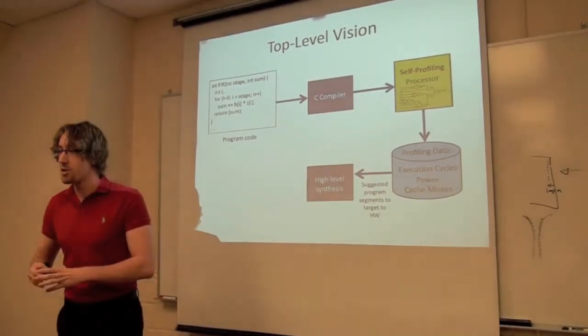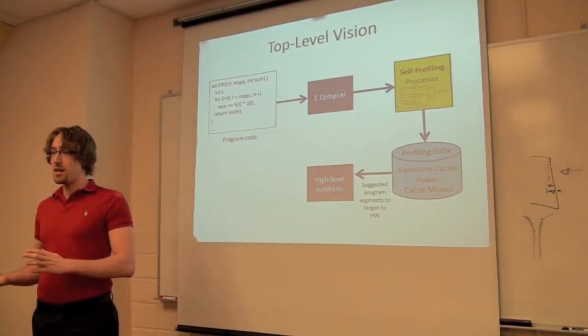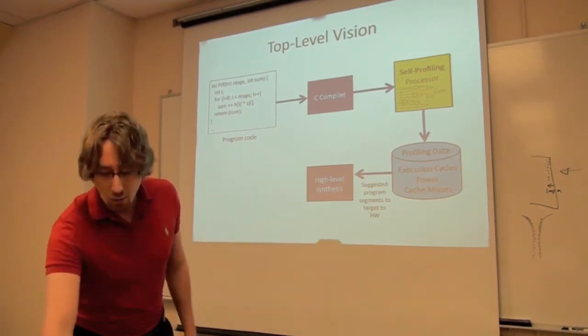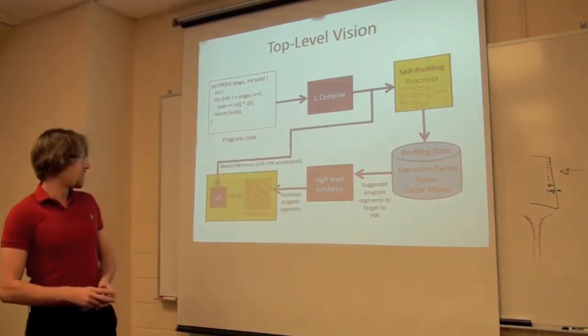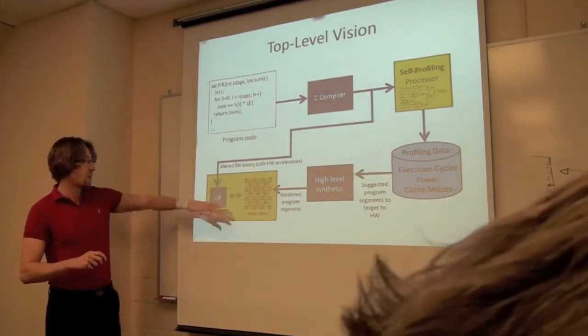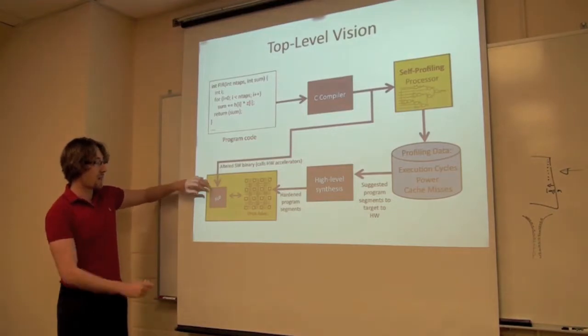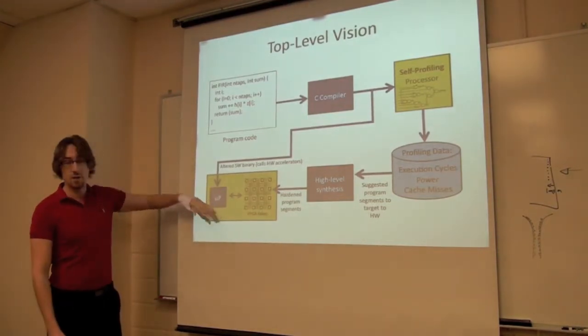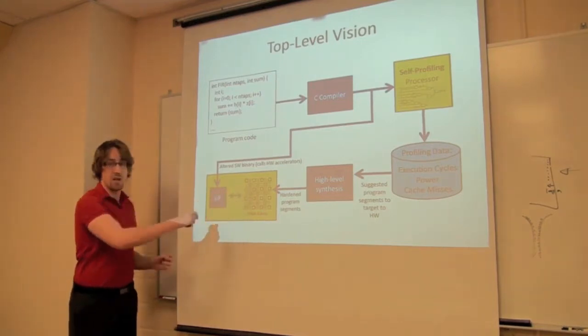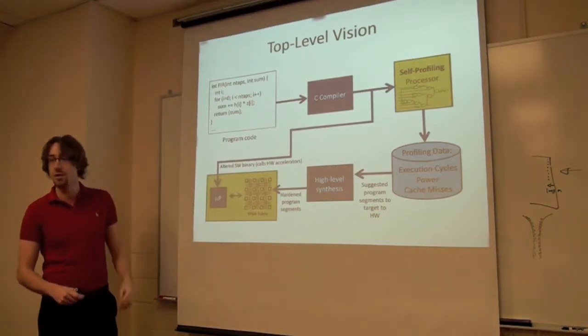So these program segments you push into what's called a high-level synthesis tool, which takes a high-level language like C and can produce synthesizable Verilog as output. When you have the synthesizable Verilog, you can put that into Quartus and compile what we call hardware accelerators, which are on the FPGA. You get this co-designed system where some of your code is running on the soft processor and then automatically the control passes into the FPGA to this hardware accelerator. When the accelerator is done, the control passes back. This should all be transparent to the user.